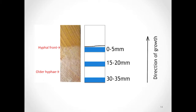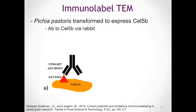What I'm interested in is to find out whether this endoglucanase, which is a type of cellulase from Postia placenta, does in fact cross into the distinct layers of the secondary plant cell wall. One way to track and follow this enzyme through the process of decay is to use an immunolabel, and specifically we are using an immunolabel transmission electron microscopy approach to track our enzyme of interest.